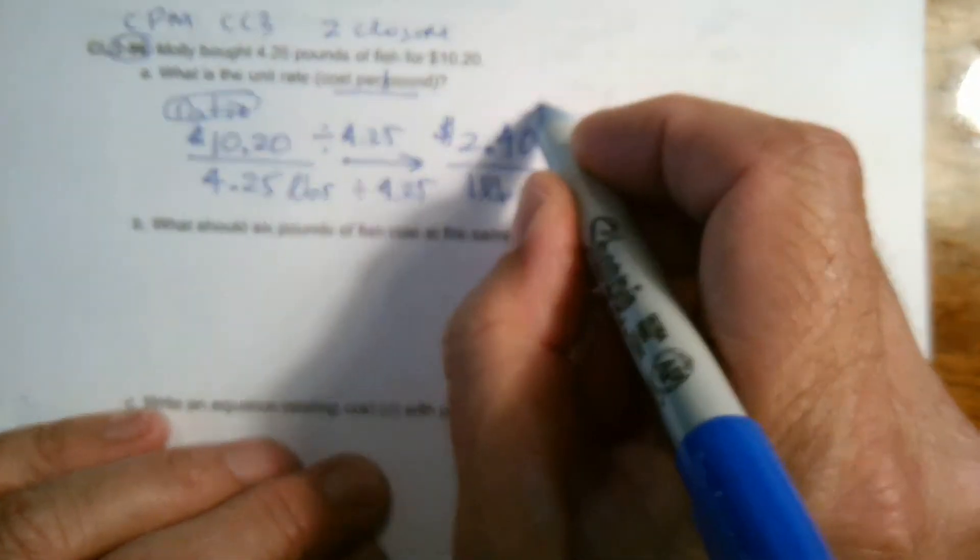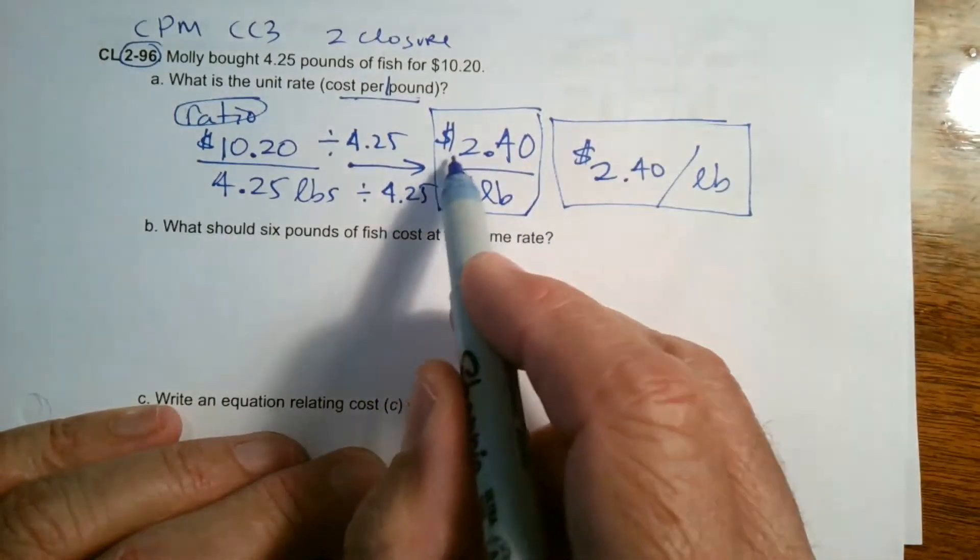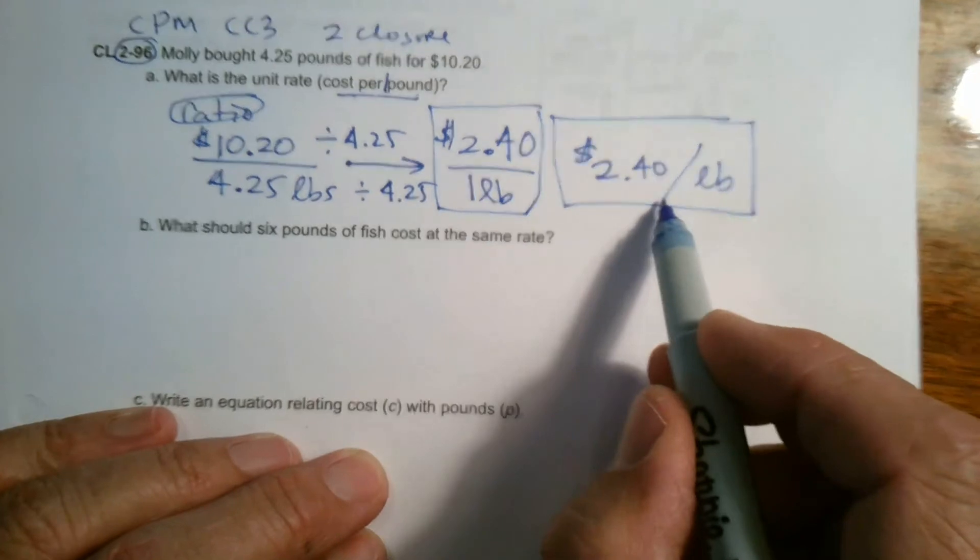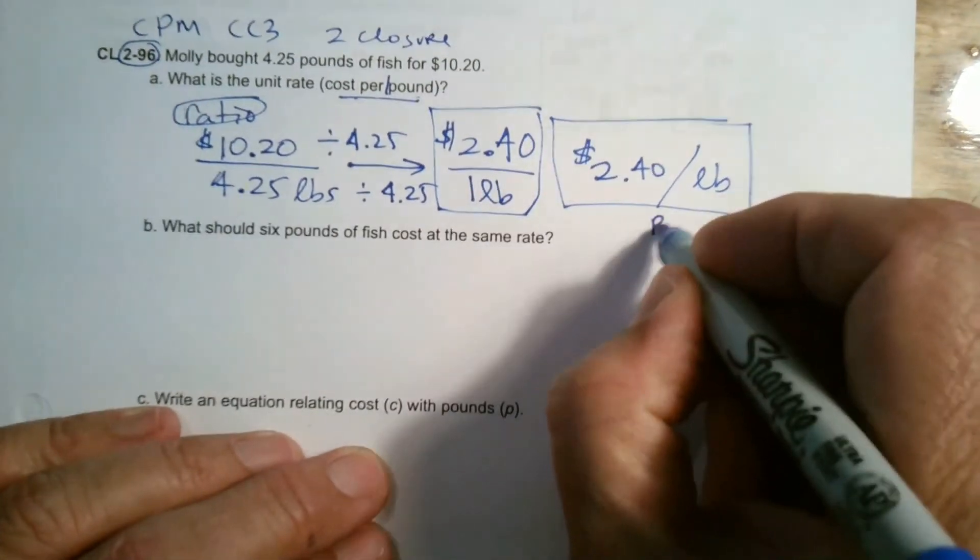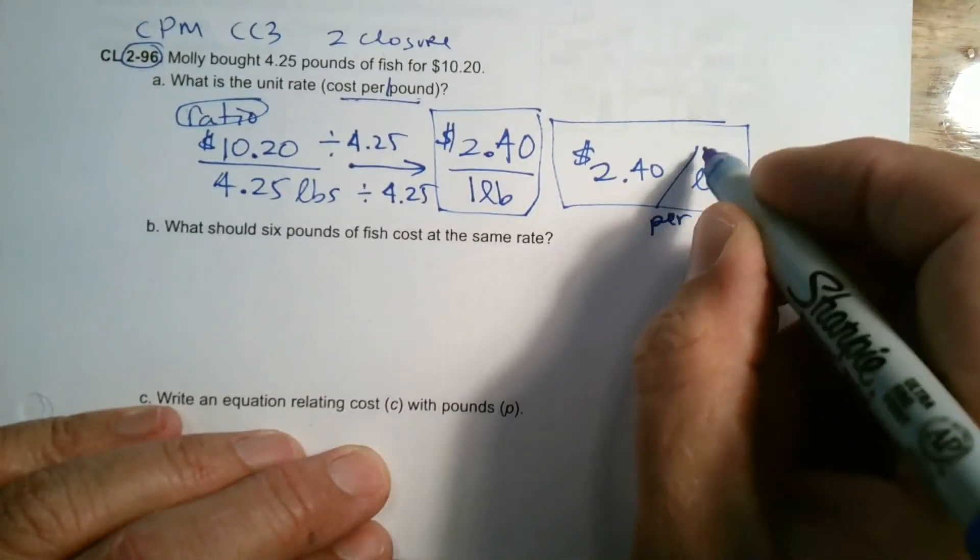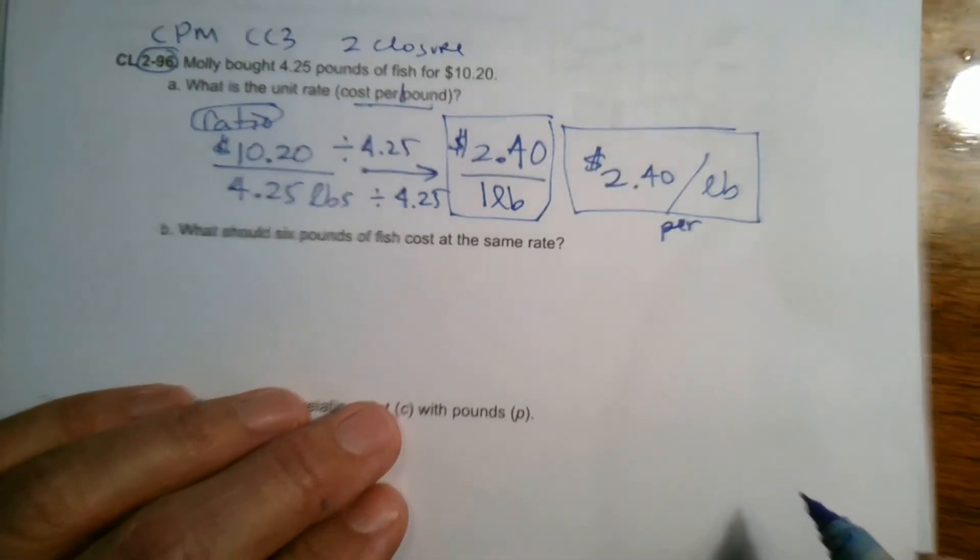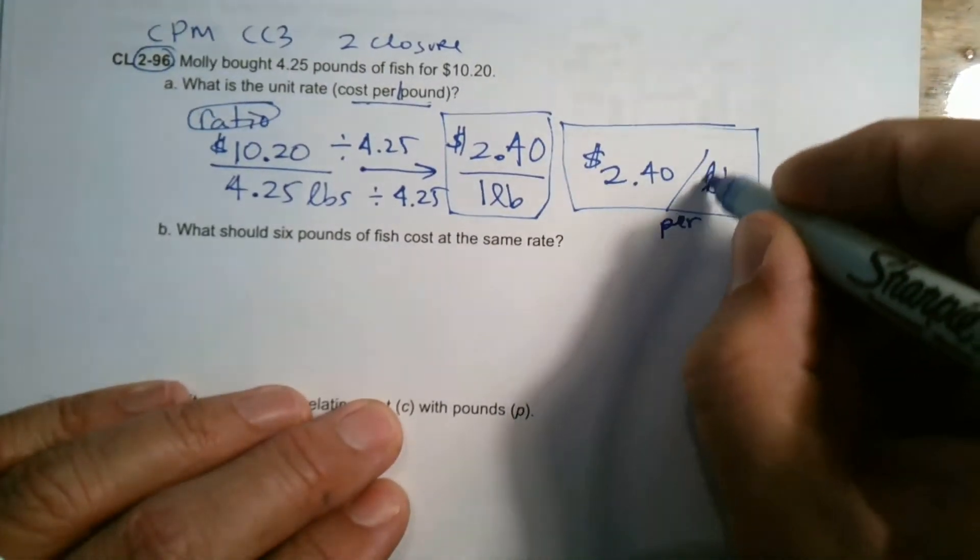So you can write a unit rate a couple of ways, $2.40 for one pound, $2.40 per pound. Or some people even use the word per instead of the fraction bar. That's your unit rate. And LB stands for pound.